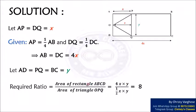The area of a triangle is half base times height. Here the triangle OPQ has base length Y and height X. Therefore the area of triangle OPQ is 1/2 XY. From this we get the ratio is equal to 4XY divided by 1/2 XY which is 8.